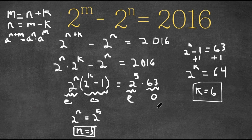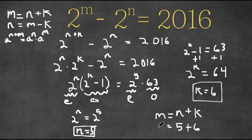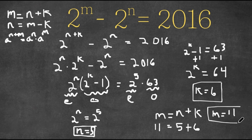So we know that m is equal to n plus k. We already have the values for n and k: n is 5 and k is 6, meaning m is equal to 5 plus 6, which is 11. So m is 11. So now we have our values for n and m.